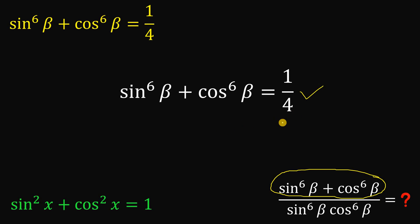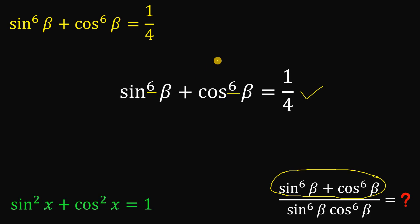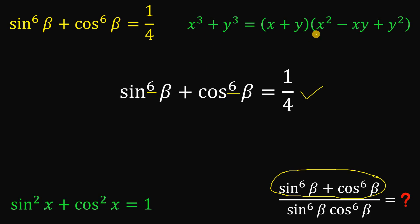The question is how do we get the product of sine and cosine? One way is to square both sides, but when we do that the exponent of sine and cosine becomes 12, and that's not good. So instead of raising both sides to a certain power, what we're going to do is to factor this out. Take note, 6 is a multiple of 3, so we can use the sum of two cubes: x cubed plus y cubed equals x plus y, multiplied by x squared minus xy plus y squared.